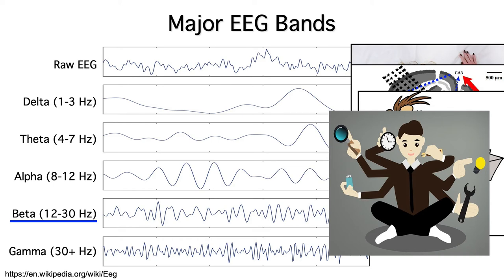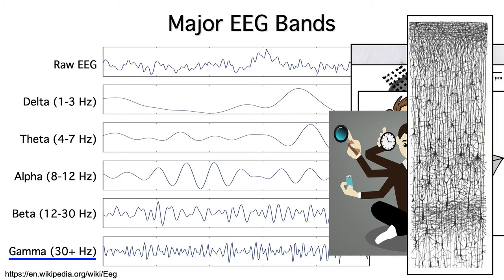At the upper end, we see gamma band oscillations. They occur so rapidly that they presumably reflect short-range feedback loops within a cortical column. Gamma band oscillations tend to be quite small, and they can be difficult to distinguish from muscle artifacts in scalp recordings.